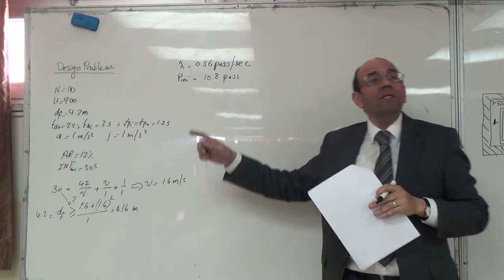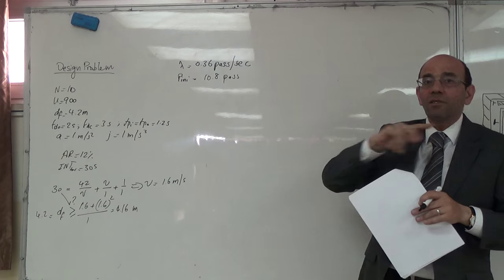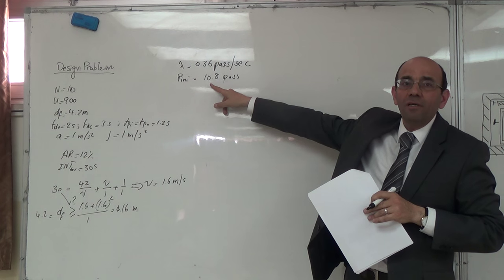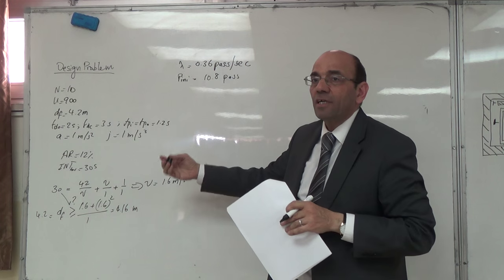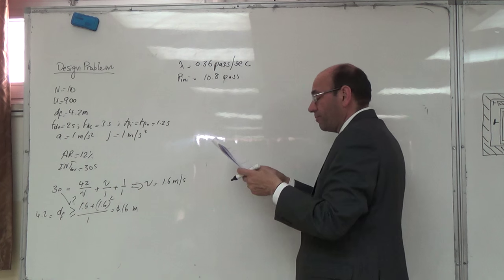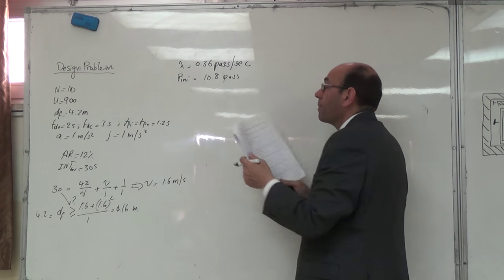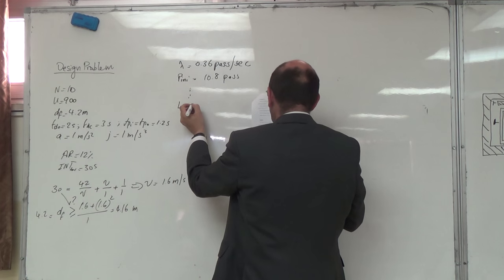احنا معلش عمانة بنستعمل fractions. لما ننتقل من calculation ل simulation راح نلغي نستعمل أرقام كاملة. بالsimulation صعب بحط 10.8 passengers. بدخل يا عشرة يا 11. فلما ننتقل لل simulation راح نوقف نعمل هاي اللي fraction. بس احنا هون هنفاهمين انها.